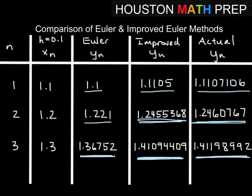Euler and improved Euler methods are generally okay, but for high accuracy, a Runge-Kutta method is preferred. The improved Euler is sometimes called Runge-Kutta order 2, while a fourth-order Runge-Kutta method is more accurate. In practice, this algorithm would be programmed into a computer, where h can be made extremely small — perhaps 10 to the negative 6 — allowing very rapid and highly accurate computation to dozens of decimal places.